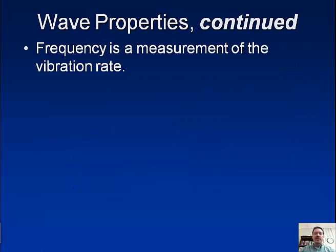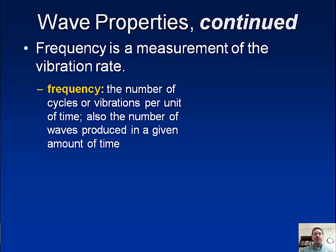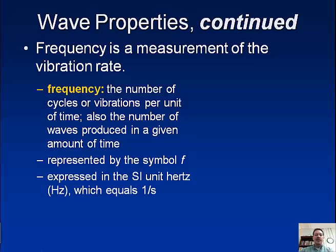So frequency is a measurement of vibration rate. We define this as the number of cycles or vibrations per unit of time, also the number of waves produced in a given amount of time. We represent frequency with lowercase f. And this is expressed in the SI unit hertz. And actually we can also call it inverse seconds. We can represent one over s or s to the negative one. But we can change that to just equal hertz. So hertz is just how many cycles or how many vibrations we have per second. And we change that from cycles per second to hertz.